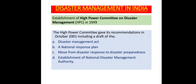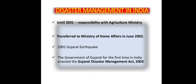Disaster Management in India: The High Power Committee on Disaster Management was established in 1999. It gave its recommendations in October 2001, including a draft of the Disaster Management Act, a National Response Plan, and a move from Disaster Response to Disaster Preparedness, as well as the establishment of the National Disaster Management Authority. Prior to 2001, responsibility lay with Agriculture Ministries, then transferred to Ministry of Home Affairs in June 2002. In 2001, the Gujarat earthquake prompted the Government of Gujarat to enact the Gujarat Disaster Management Act 2003 — the first such act in India.